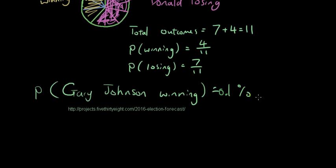So 0.1% is the same as 1 over 1000. You can try typing 1 over 1000 into the calculator. You should get 0.001, which is the same as 0.1%.